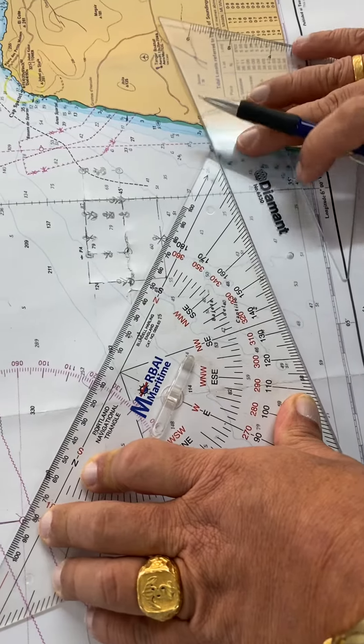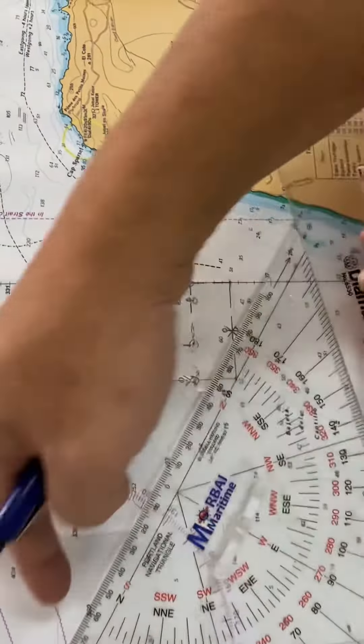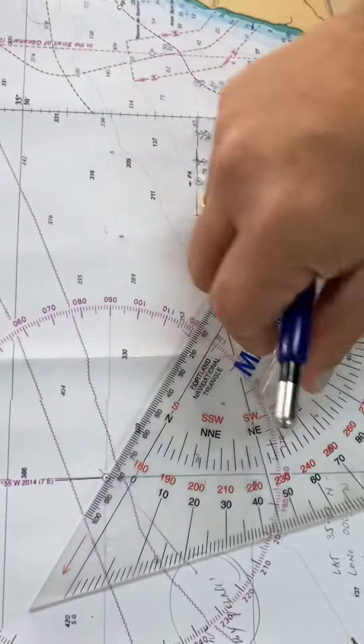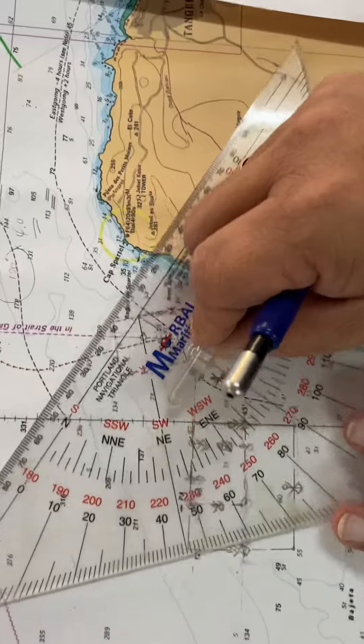You can slide this bearing to this point, which is Cap Spartel. Then you can draw a line.